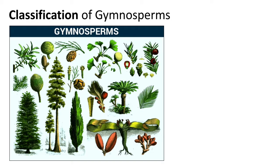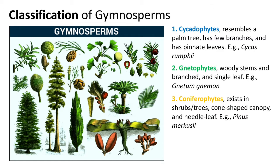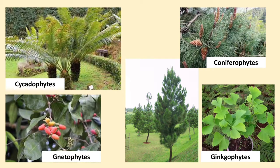Next is the classification of gymnosperms. Gymnosperms can be divided into four classes: Cycadophytes, Gnetophytes, Coniferophytes, and Ginkgophytes. You can see in the given list the main characteristics of each class, along with pictures showing example plants from each class.